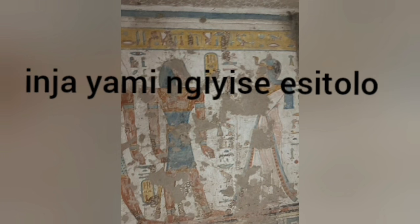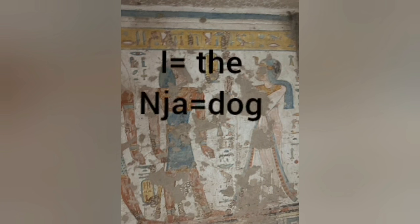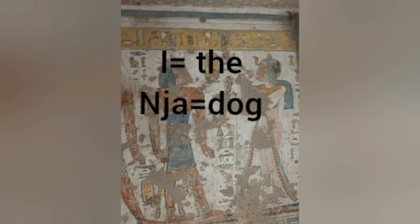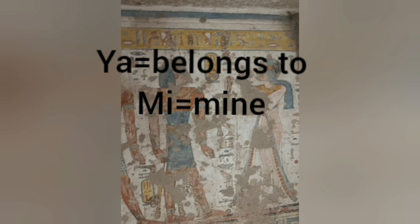The sentence in Zulu would look different. You'll notice there aren't as many separated words, but each word carries a lot of meaning. For instance, the word 'Inja' means 'my dog.' The 'In' part is a prefix, the 'Ja' part means dog, and 'Ya mi' is a suffix — 'Ya' means 'belongs to' and 'Mi' means 'mine.'